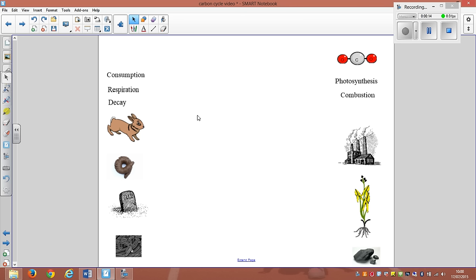We need to understand how carbon cycles between all of these organisms and non-organisms using these processes written on the screen at the moment: consumption, which is eating, respiration, decay, photosynthesis, and combustion.